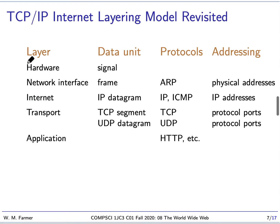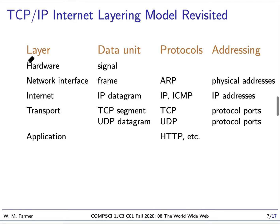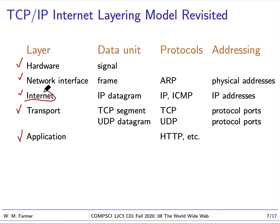Let's review the internet layering model. The layers are: hardware, the network interface — where we talk about how hosts are connected to physical networks — the internet layer, the transport layer, and the application layer. At the internet layer, the internet works as a connectionless network. At the transport layer, it works as a connection-oriented network.